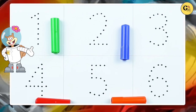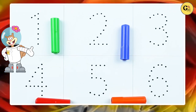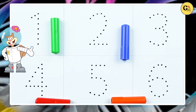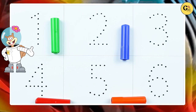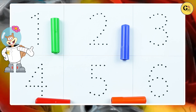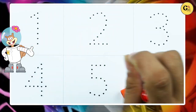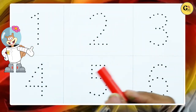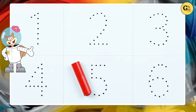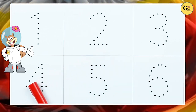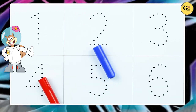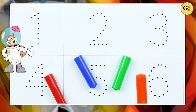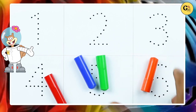Hello friends! Today we learn numbers 1 to 10 with some colors: red color, blue color, green color, orange color.